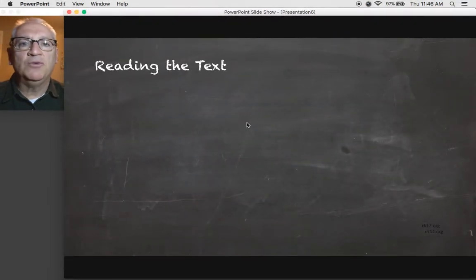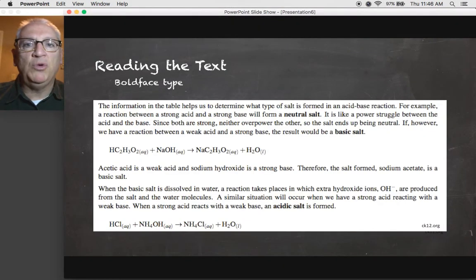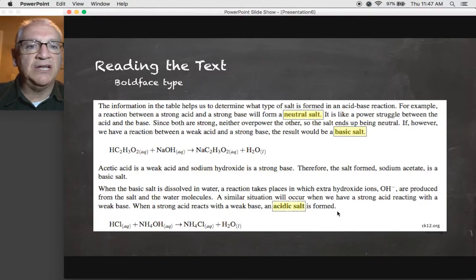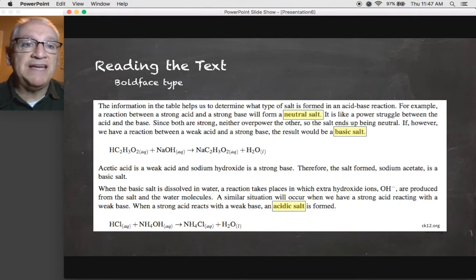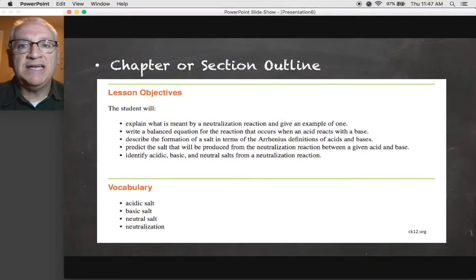Now in reading the text itself, one of the first things you want to do is look for bold face type. Now you can see the bold face type here. One of them says neutral salt. The other says basic salt. This last one says acidic salt. And so I'll highlight those with this yellow highlighter. And that's one of the techniques that you can use, you can highlight your bold face print.